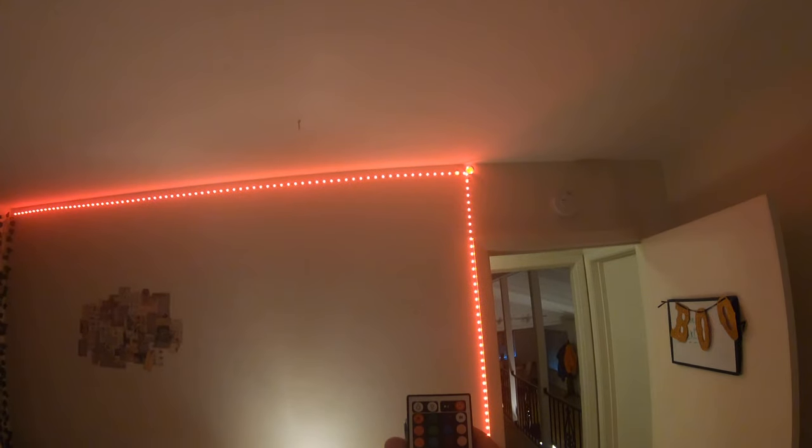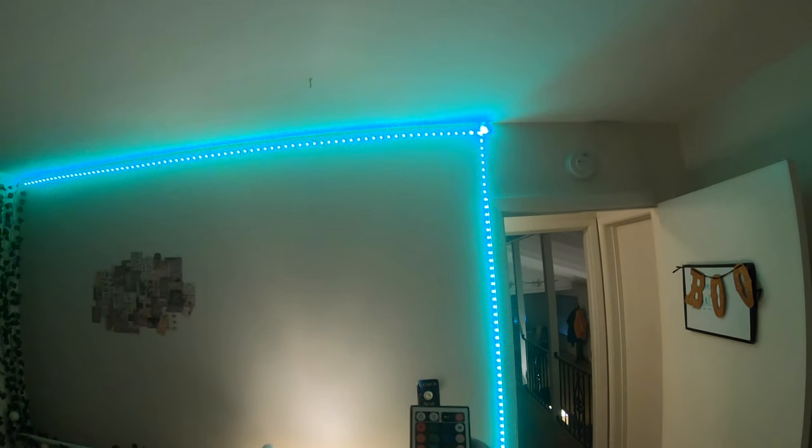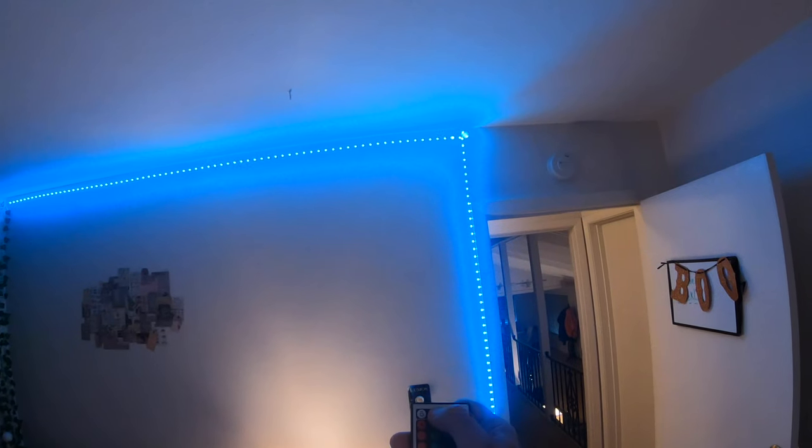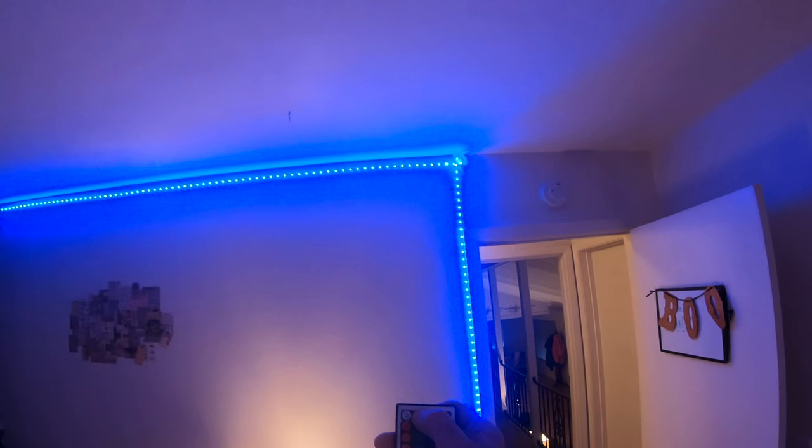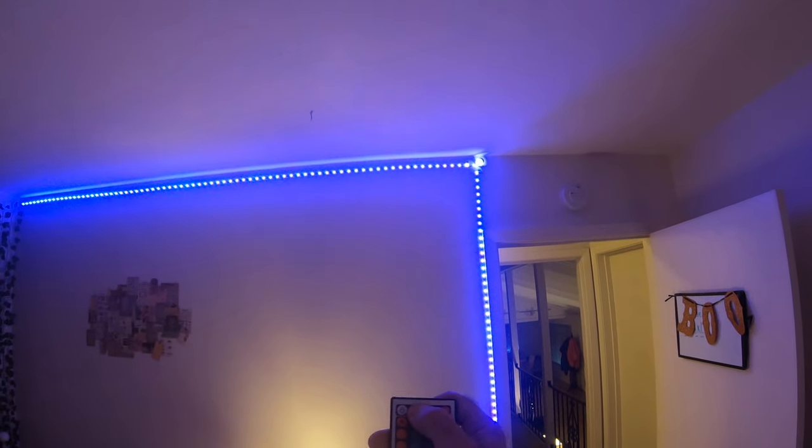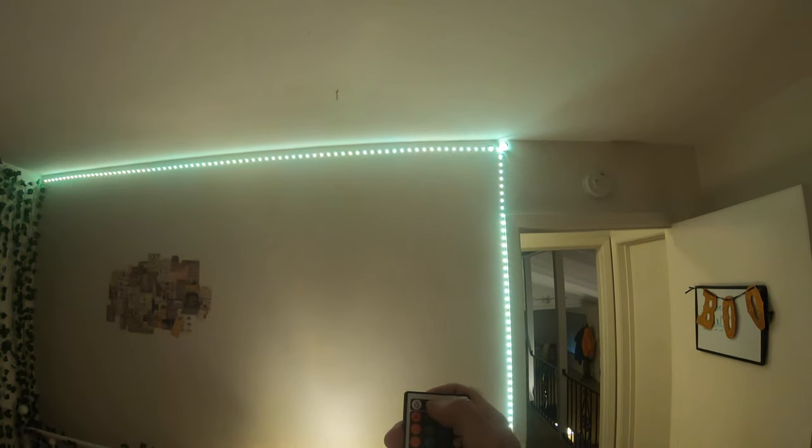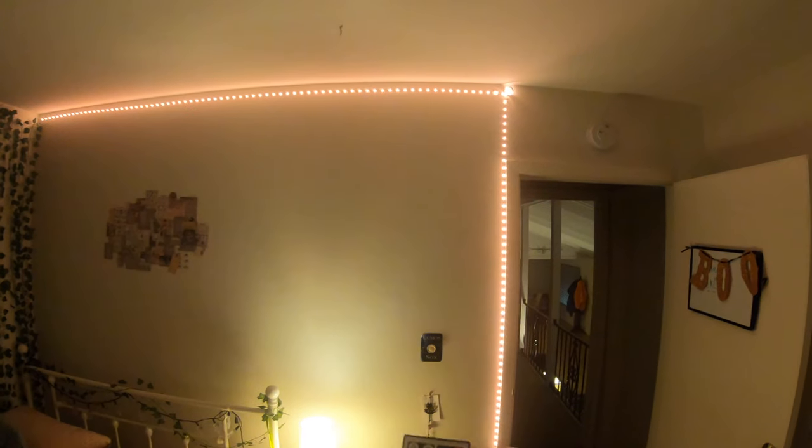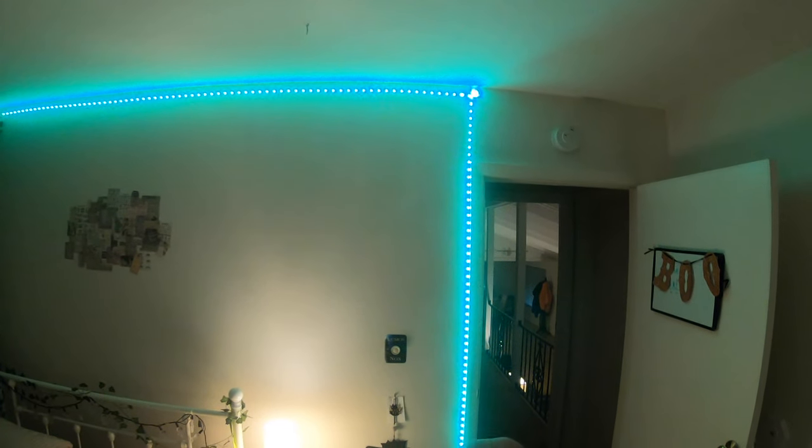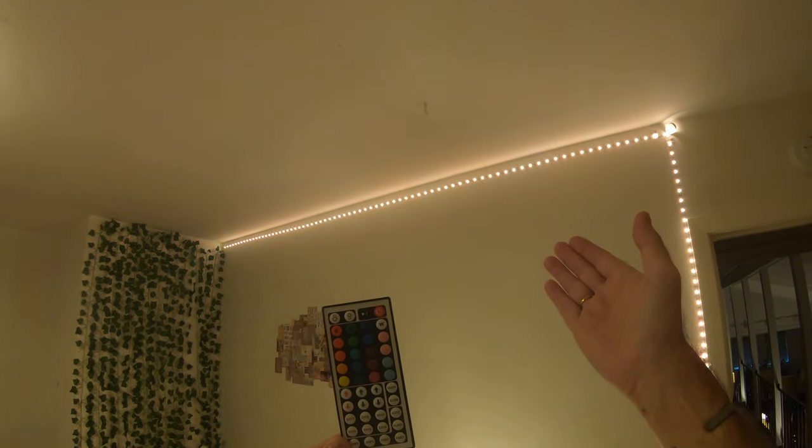Hopefully that's coming out well on camera. As I say you've got lots of functionality on the control pad. The instruction manual, well it's quite useful, it's in incredibly small print. You can dim the lights, you can increase the brightness of them using the buttons on here. When you're done, all you've got to do to turn them off is hit this switch here.